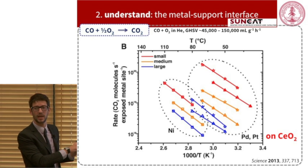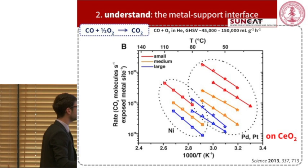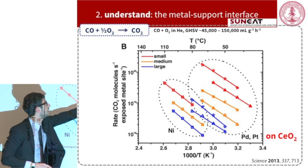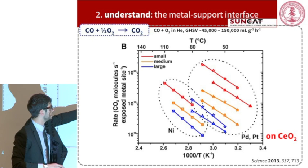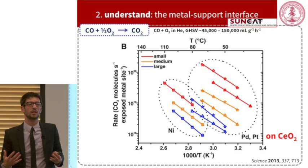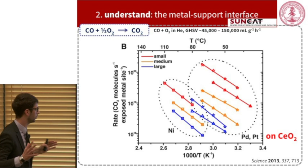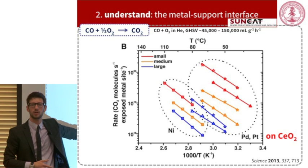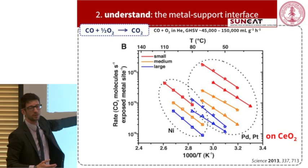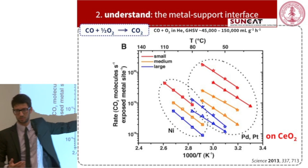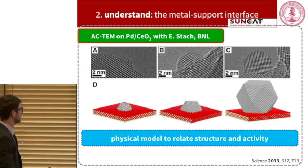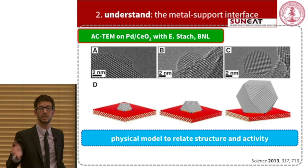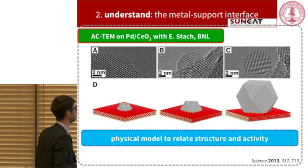Here we have the activity of our nine samples: three platinum, three palladium, and three nickel with different sizes on ceria. This is the rate of the CO oxidation reaction against the inverse temperature. What we need to consider is that the small nanocrystals — reported here in red — perform better than the medium nanocrystals and better than the large nanocrystals. And it doesn't really matter what metal we are using, whether the very expensive platinum or the very cheap nickel, as long as the particles are small.